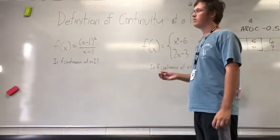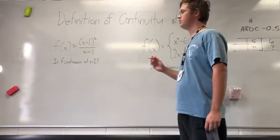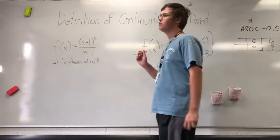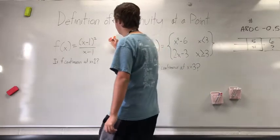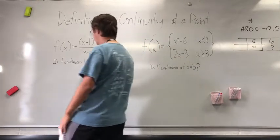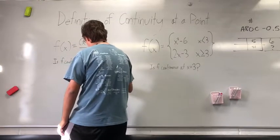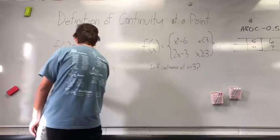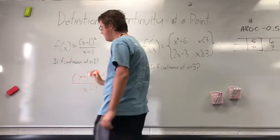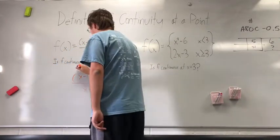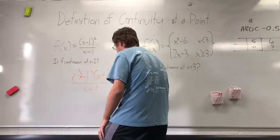The first problem asks us to see if f is continuous whenever x equals 1. We can start by simplifying the equation. We have x minus 1 squared; we can use difference of squares to get (x minus 1)(x plus 1) all over (x minus 1). We can then cancel out the x minus 1, so our function is now just x plus 1.